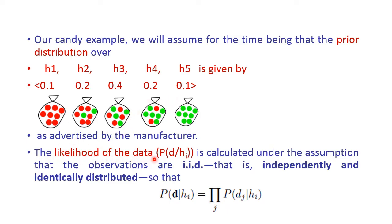Next we find the likelihood of the given data across all five candy bags. We compute the product of all likelihoods. The equation for computing likelihood is: P(d | hi) = product over j of P(dj | hi). This is the computation of prior distribution and likelihood.